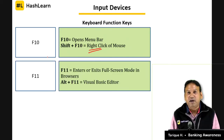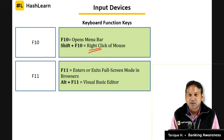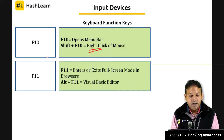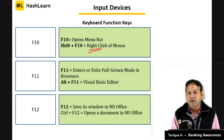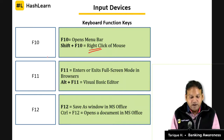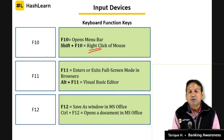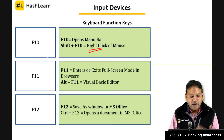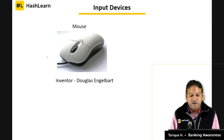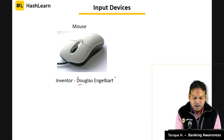Now let us look at other input devices. The mouse — invented by Douglas Engelbart — is a common pointing device. The joystick is used in games for controlling operations. We also have the trackball — another pointing device. Mouse, joystick, trackball, and touchpad are all pointing devices used to select or move things on the computer screen.